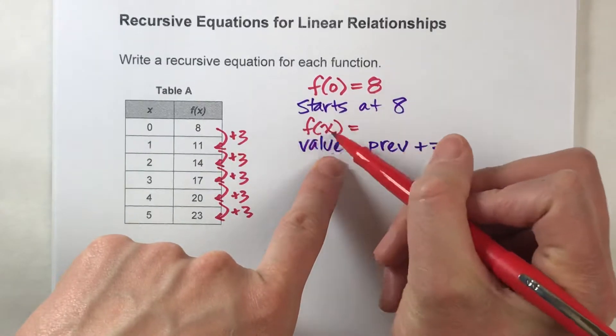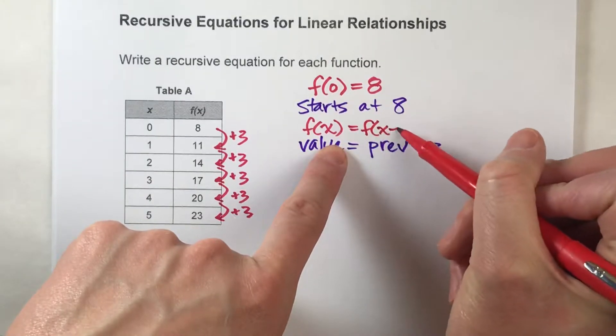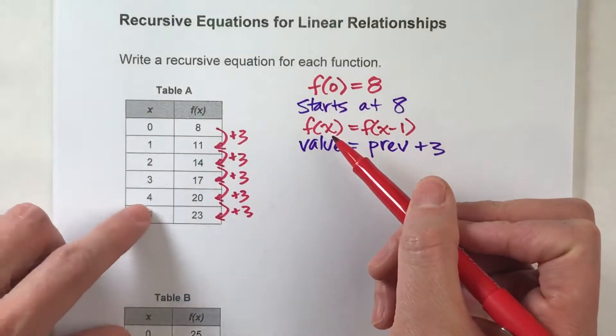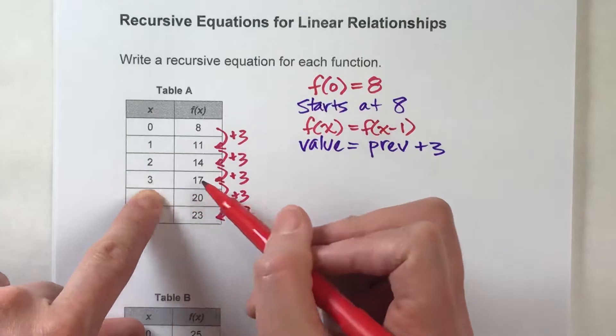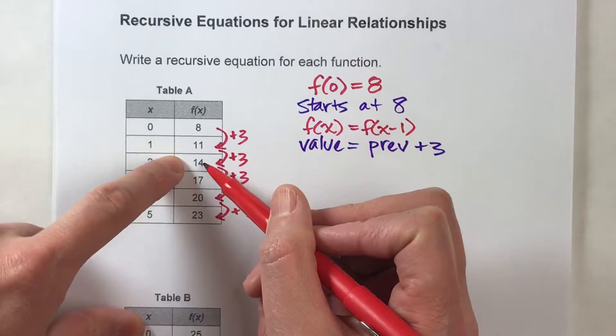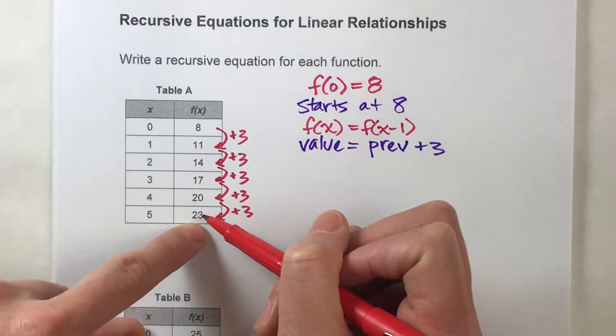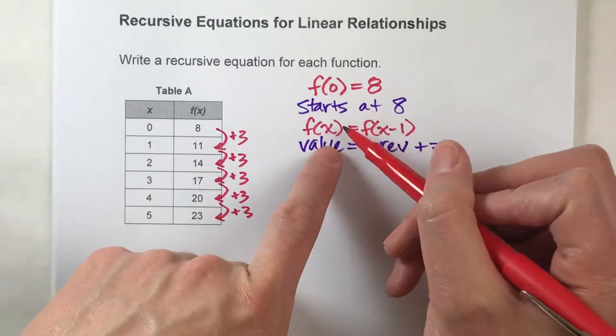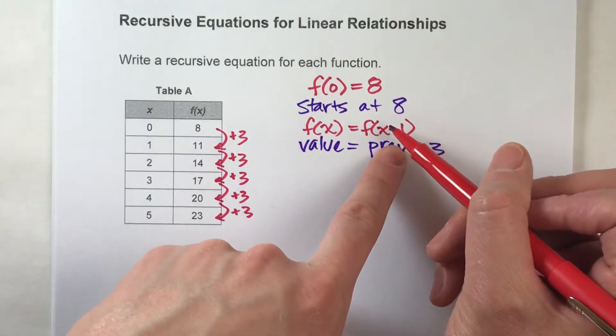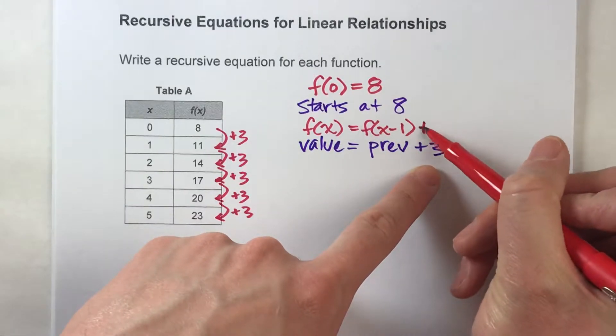Well, if we are trying to find f of x, the previous value is f of x minus 1. Meaning, no matter which x value we're looking at, let's say we're looking at 3, if we're looking for f of 3, we start by taking the value of f of 2. Or if we're looking for f of 5, we start by taking the value of f of 4. So, no matter what, if we're trying to find f of x, we start by taking the previous value of the function, f of x minus 1, and then we add 3 to it.